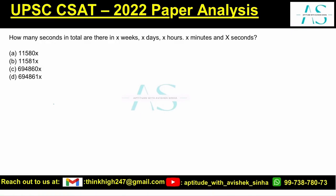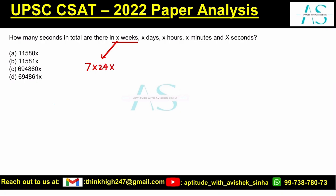How many seconds in total are there in x weeks, x days, x hours, x minutes, and x seconds? Let's break this down — instead of x, let's talk about one of each. One week contains seven days, and each day contains 24 hours. Ek ghante mein 60 minutes, and one minute has 60 seconds.